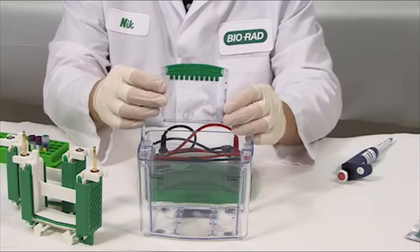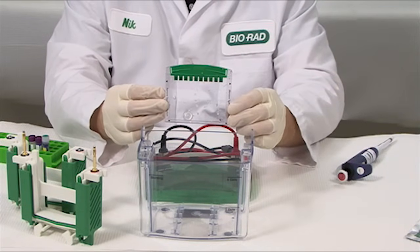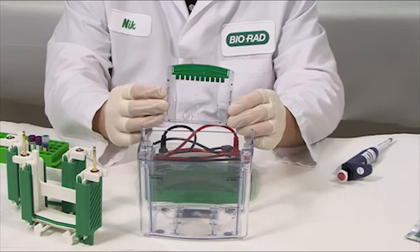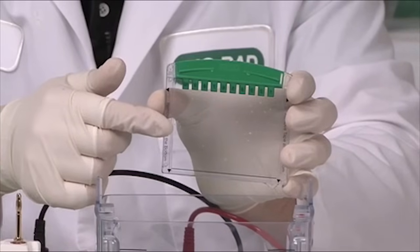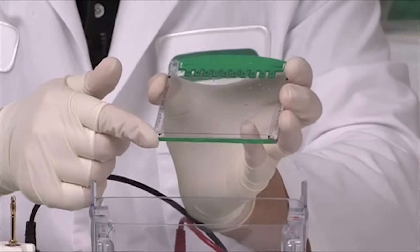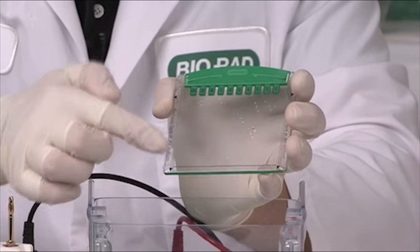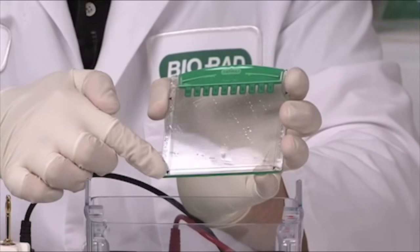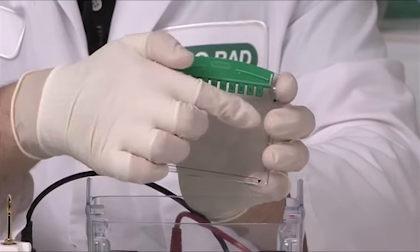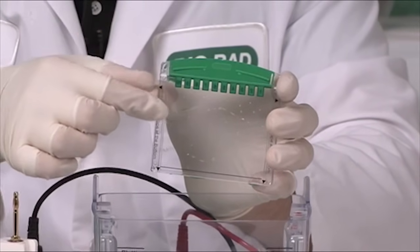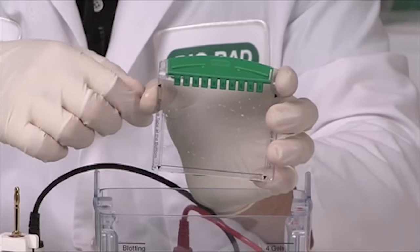The TGX gels have several features that were added based on input from you, our users. The TGX gel is in an all plastic cassette which has a bottom opening design which allows for increased resolution from your run. There is a reference line to help you monitor your electrophoresis run and the wells are both outlined and labeled for easy sample loading and sample identification.